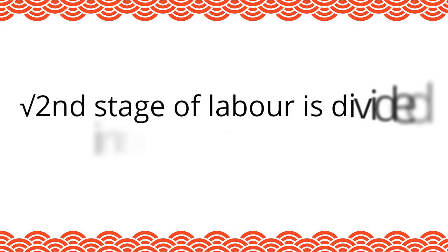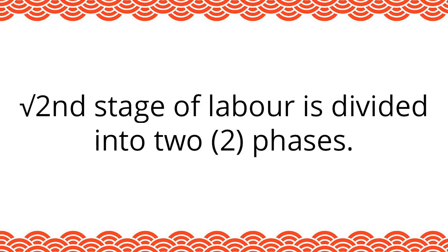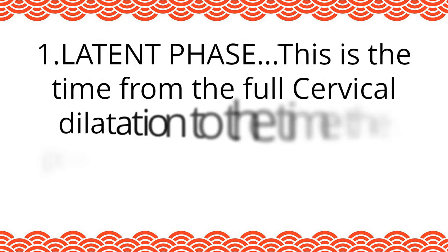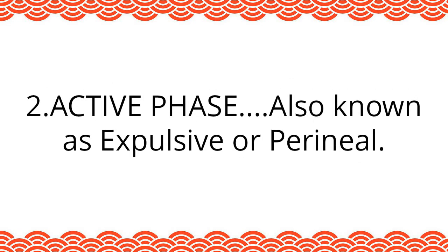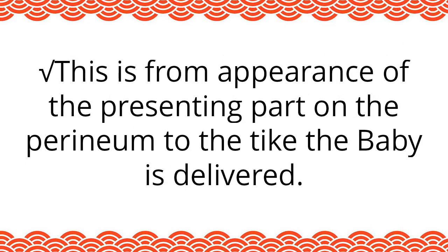Phases. The second stage of labor is divided into two phases. One: the latent phase — this is the time from full cervical dilatation to the time the presenting part appears on the perineum. Two: the active phase, also known as expulsive or perineal — this is from the appearance of the presenting part on the perineum to the time the baby is delivered.